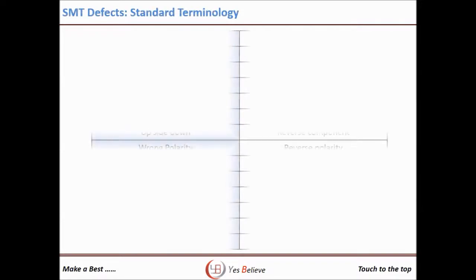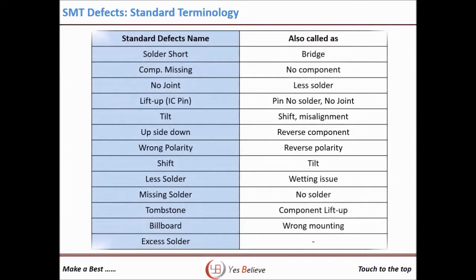Let's check how different nomenclature is used for the same defect depending upon the inspector. Solder shot is referred to as bridge. Component missing is called no component. No joint is also referred to as less solder. Lift up is sometimes called pin no solder or no joint. Tilt is referred to as shift or misalignment. Upside down is referred to as reverse component or wrong polarity. Component shift is called tilt. Tombstone is called component lift up, and billboard is referred to as wrong mounting.